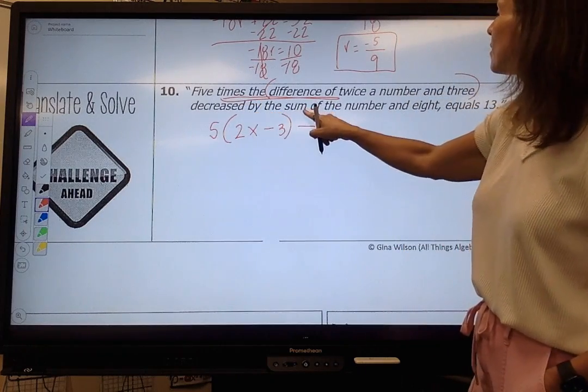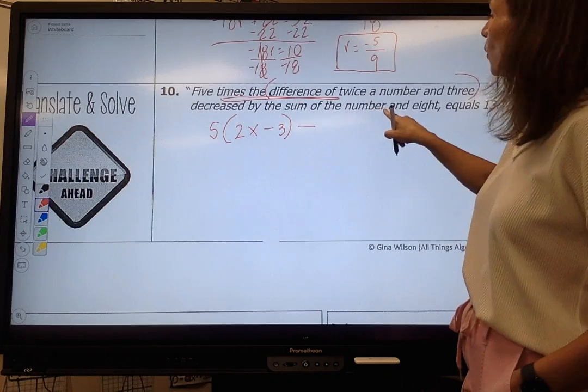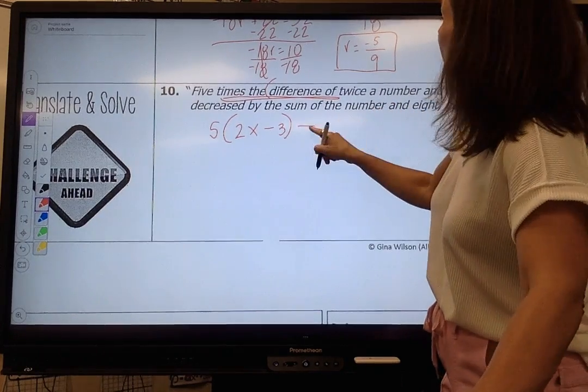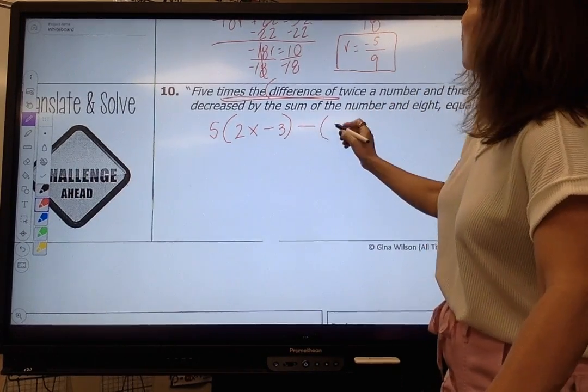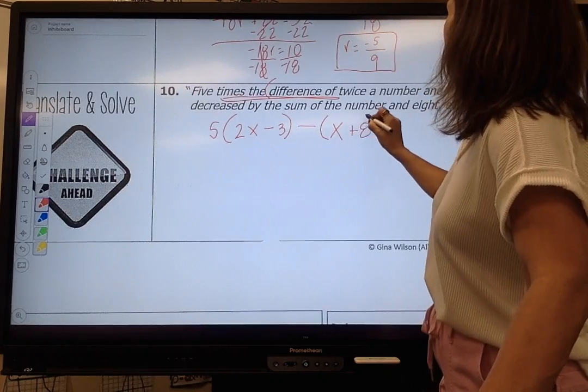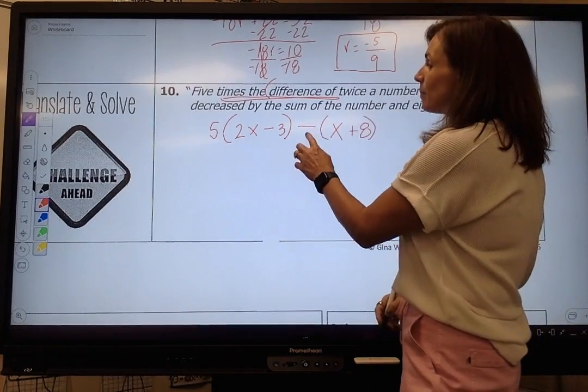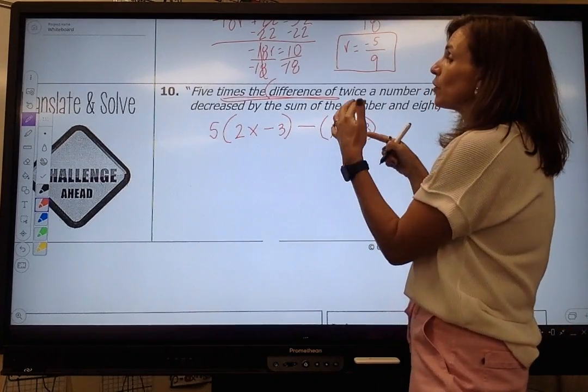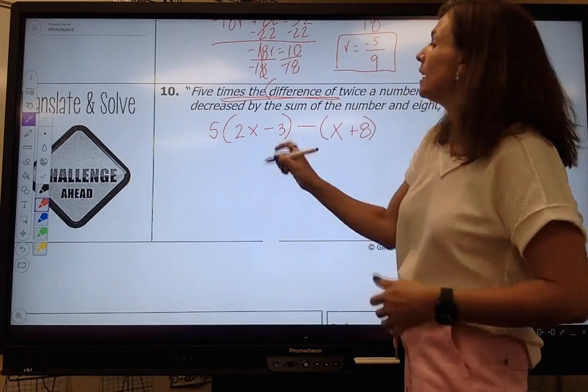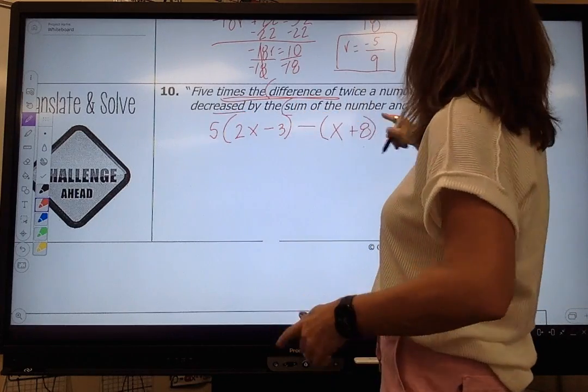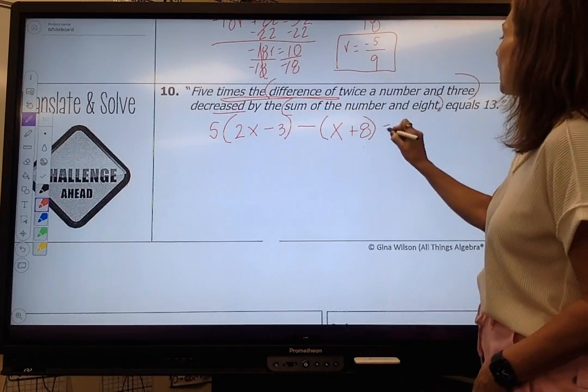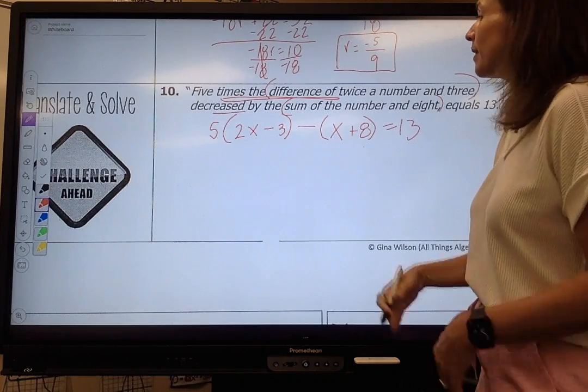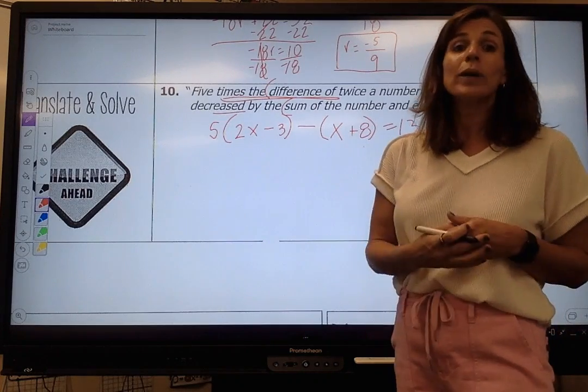Decreased by the sum of the number in eight. So it's decreased by what? By the sum of a number in eight. Again, it has to be in parentheses because you're distributing. It's decreased by the sum of the number in eight, and that equals 13. Now that we've written it appropriately, we can solve it.